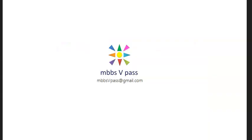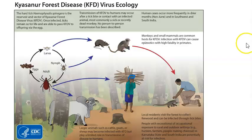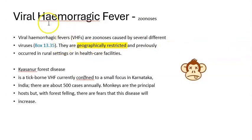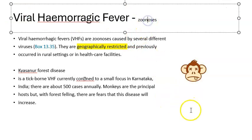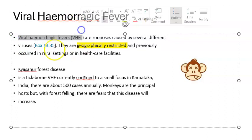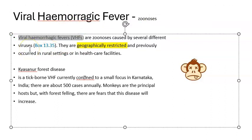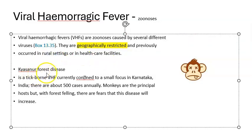KFD is a viral disease that causes viral hemorrhagic fever — it is a zoonosis, meaning it comes from animals. There are many types of viral hemorrhagic fevers; KFD is one of them. It is specifically a tick-borne viral hemorrhagic fever, and diseases of this type are usually geographically restricted.